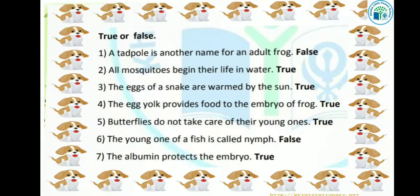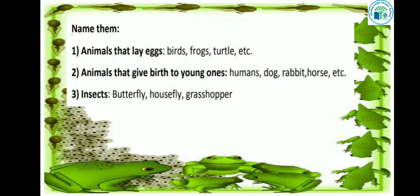Now kids, our next topic is name them. First: animals that lay eggs — birds, frogs, turtles, etc. Next: animals that give birth to young ones — humans, dog, rabbit, horse, etc. And third: insects — butterfly, housefly, grasshopper, ये सारे insects हैं.